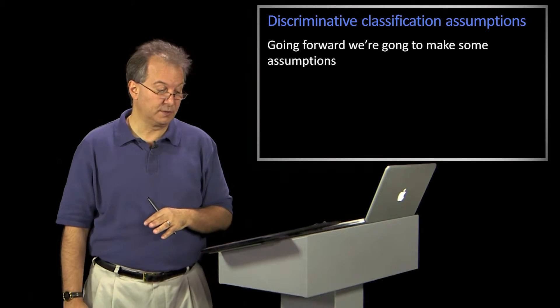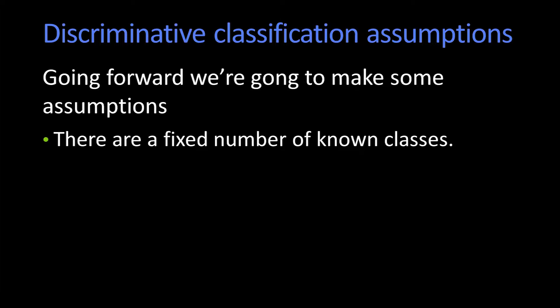Before we go forward, we're going to make some assumptions. Our first assumption: we're going to assume that there's a fixed number of known classes. So I'm going to tell you there are four things in this universe you have to worry about — they might be A's, B's, C's, and none of the above. It's not like later I'm going to give you some D's or E's. No, I'm going to tell you the classes that exist a priori. When I train this system and define the boundaries, I'm only worrying about the classes you tell me in advance.